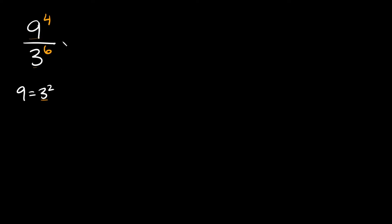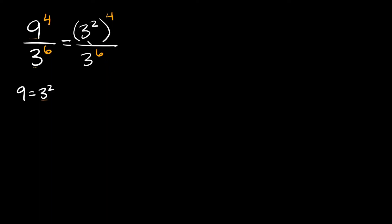So let's do that as our first step: making the bases match up. I'm going to rewrite this 9 as 3 squared. And then we still have this exponent, this 4 out here, and that goes over the bottom number: 3 raised to the 6th power. Something spectacular just happened — we have the same base, so now we can simplify these like normal.